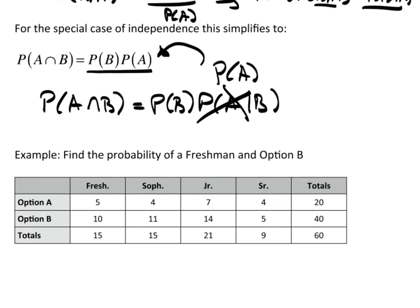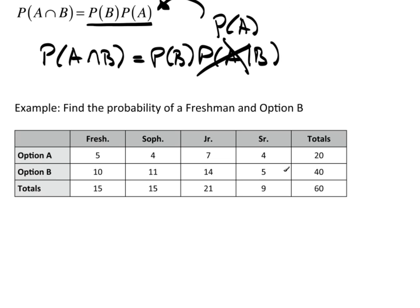So, let's go back to this. Let's find the probability of a freshman and option B. Well, off of a table, this is really very fast and direct.